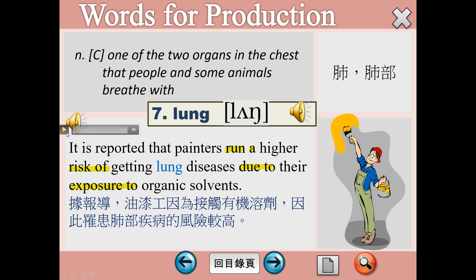Number 7，lung。It is reported that painters run a higher risk of getting lung diseases due to their exposure to organic solvents. 看一下例句的開頭，根據報導，學生不要永遠根據都只會用according to，可以把report這個動詞用被動的方式呈現再加名詞子句，it is reported。Painters run a higher risk of，run a risk of是指有什麼樣的風險，所以run a higher risk of是指有較高的風險，會得到肺部相關的疾病。Due to是表示原因的一個片語，就是因為的意思。Exposure to organic solvents，exposure是指暴露，曝露在什麼樣的環境之下，用to這個介系詞。